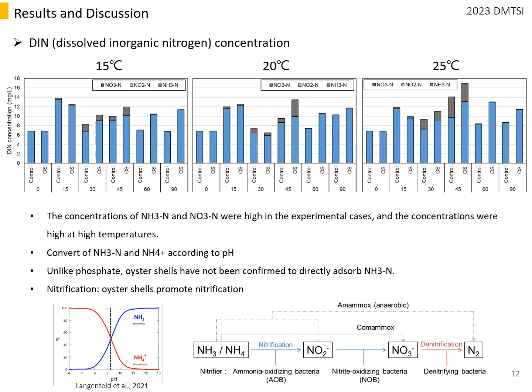Unlike phosphate, the mechanism by which oyster shell directly absorbs ammonia has not yet been elucidated and is related to the promotion of nitrification. In this study, nitrate concentrations started to increase from about day 5 and appeared until about day 45.